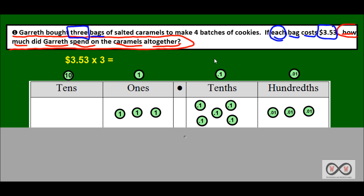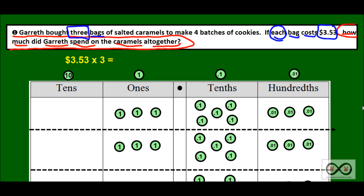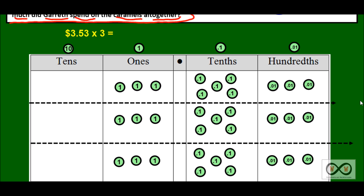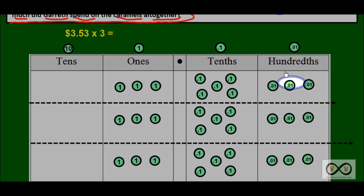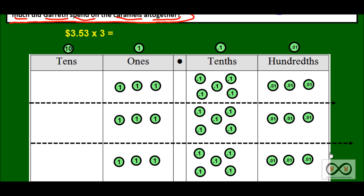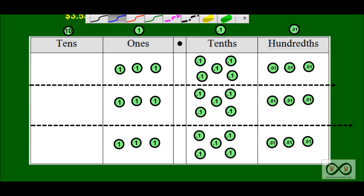We have to represent this on the place value chart. You can think of the three as: I have three groups of $3.53. So let's go ahead and represent that on the place value chart. If I'm moving too quickly for you, feel free to pause the video and resume whenever you're ready. Now that we have $3.53 times three represented on the place value chart, we can start bundling up groups of tens, starting at the hundredths place. We have three, six, nine hundredths. Do we have enough to make a tenth? Absolutely not. So we put nine hundredths as the first part of our product.